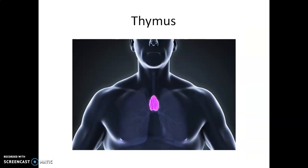Next is the thymus gland. The thymus gland is a lobular structure located between the lungs, behind the sternum, on the ventral side of the aorta. The thymus plays a major role in the development of the immune system and secretes the peptide hormone thymosin.